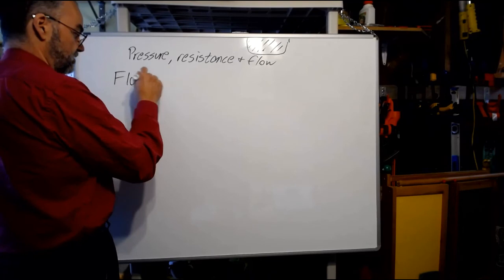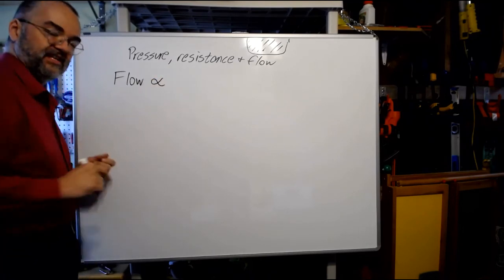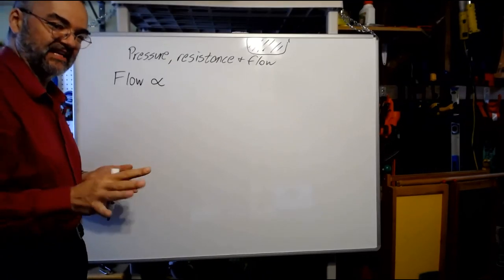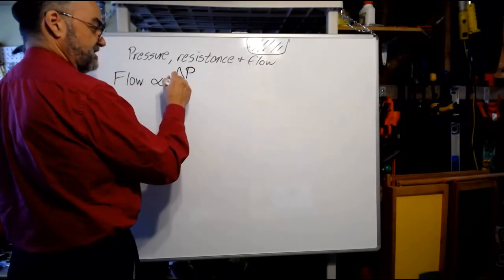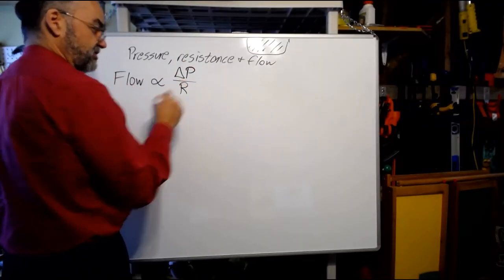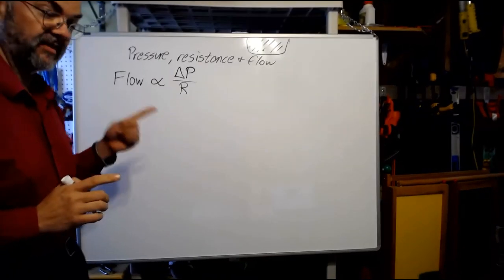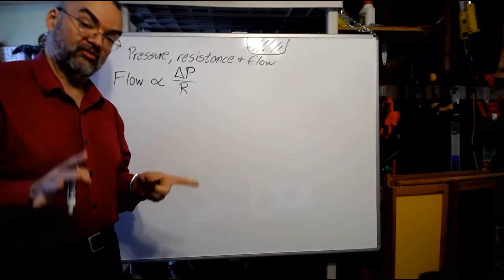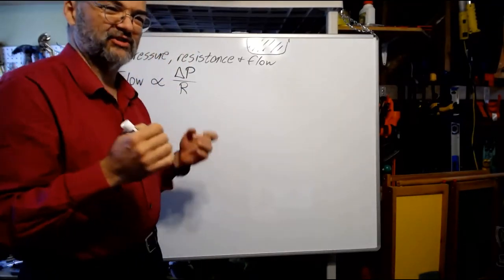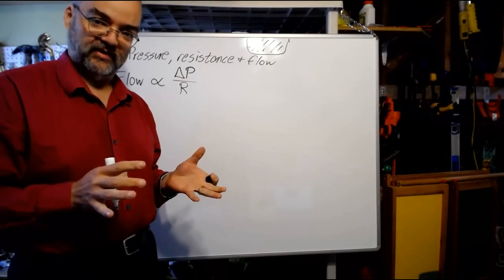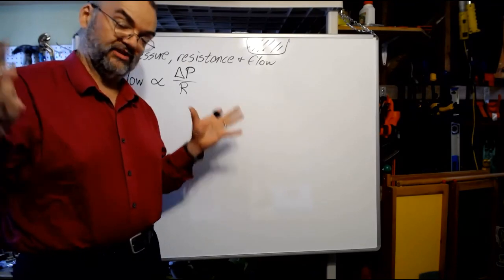Flow, this symbol is proportional to—think of it like an equals—is proportional to the difference in pressure between two locations divided by the resistance. Let's talk about each of these. First of all, let's talk about pressure. Pressure is effectively just force exerted by this fluid on the walls of its container, or force exerted on the fluid.